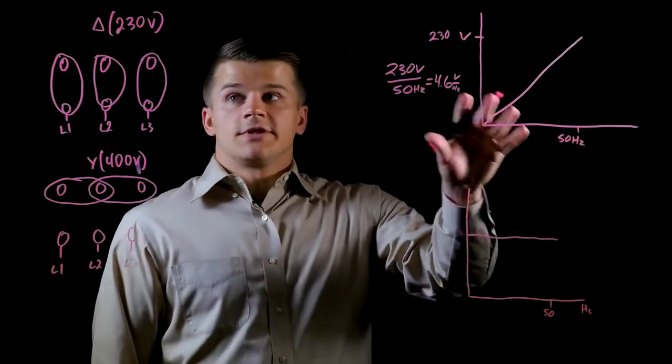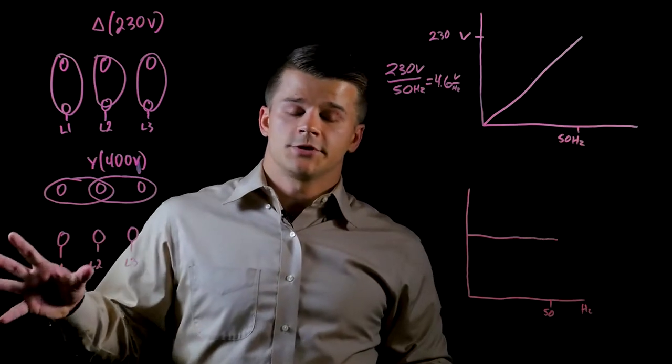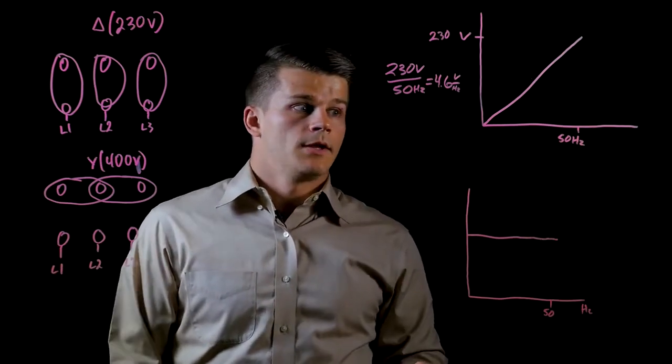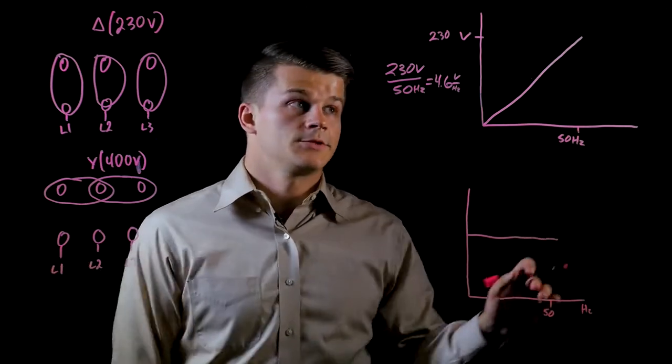With this Delta configuration, typically you would have a 230 volt input to the drive that's controlling the motor. Because that's limited to 230 volts, the output is limited to 230 volts.